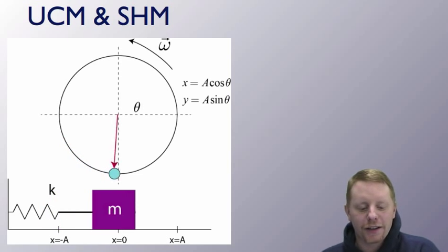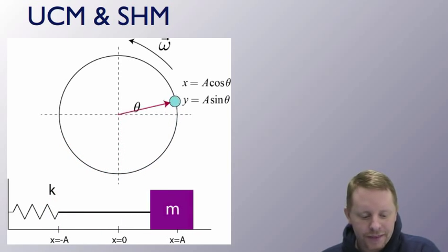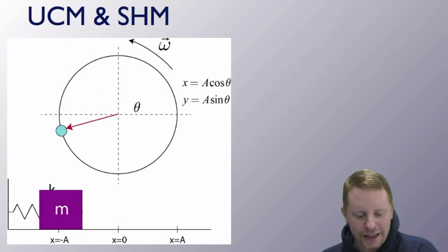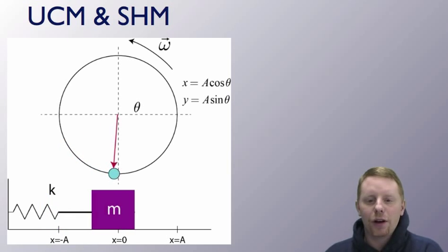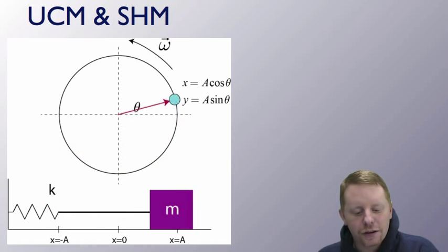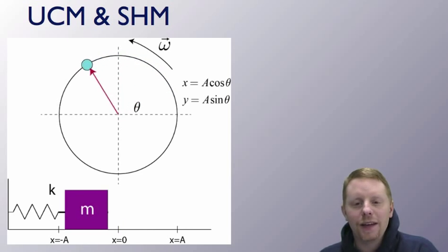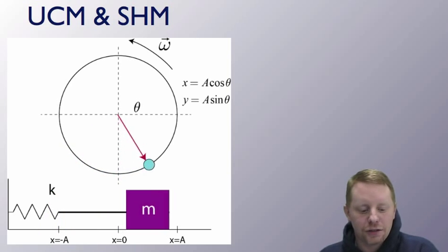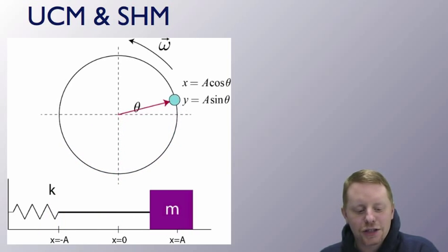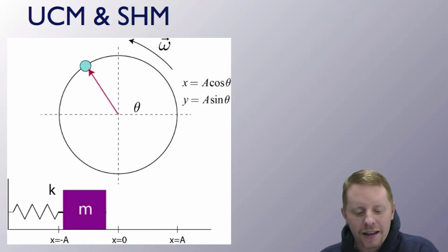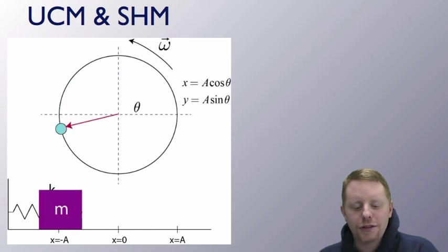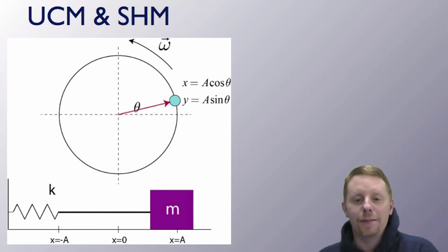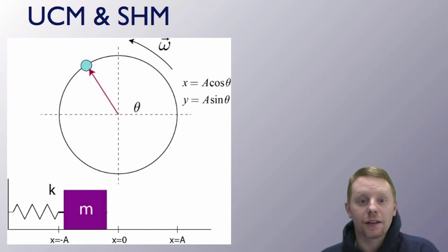Now imagine a block on a frictionless surface attached to a wall by a spring. If that block is displaced from its equilibrium position by an amount a and released, its simple harmonic motion along the frictionless surface will mirror the x motion of the object moving in uniform circular motion. Notice how the x position here mirrors the x position of that block. So simple harmonic motion and uniform circular motion are very closely related, as simple harmonic motion describes one dimension of an object moving in uniform circular motion.